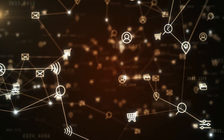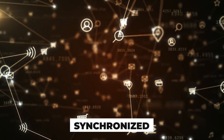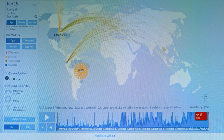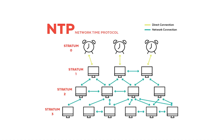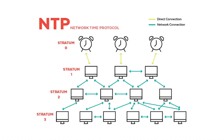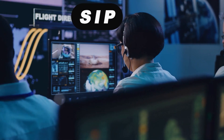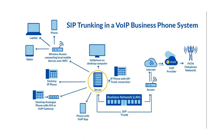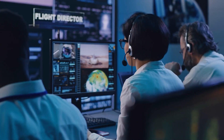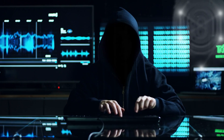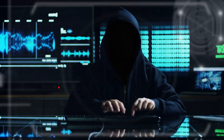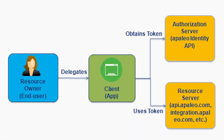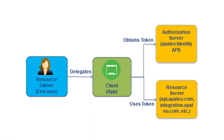NTP, or Network Time Protocol, is a digital timekeeper, making sure all the clocks in your network are synchronized. But if a hacker manipulates it, they can throw off your entire network's timing, causing chaos in logs and communications. SIP is up next — the protocol behind your VoIP calls. It's like a switchboard operator setting up your calls. If it's not secured, an attacker could listen in or even impersonate you on a call.